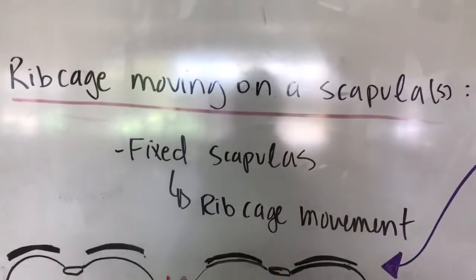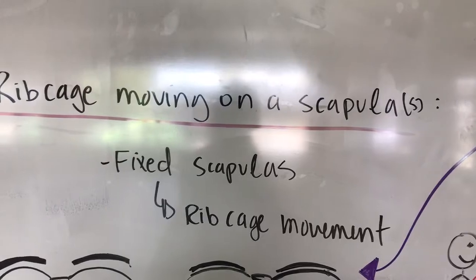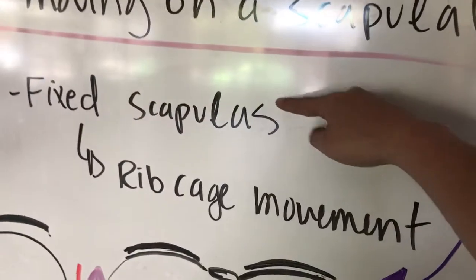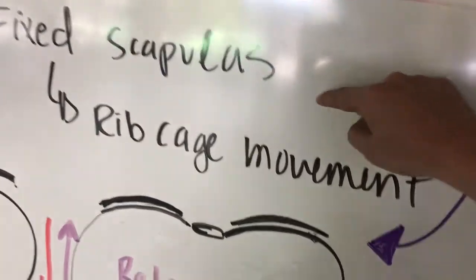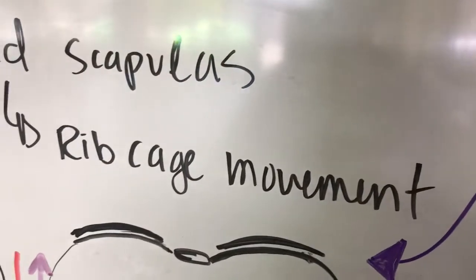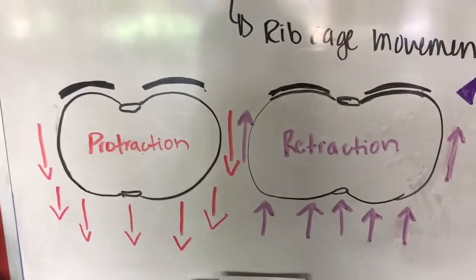But then we've got a ribcage moving on a scapula, which means scapula is fixed or the shoulder blades are fixed and then the ribcage moves around it. And this is an example of it.